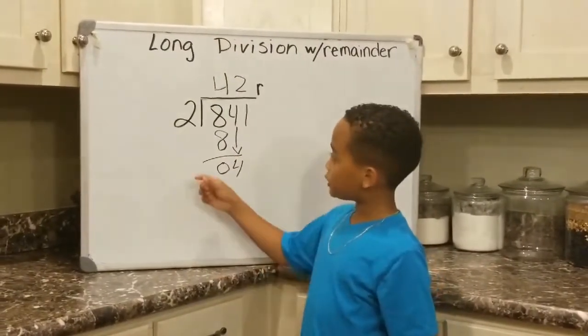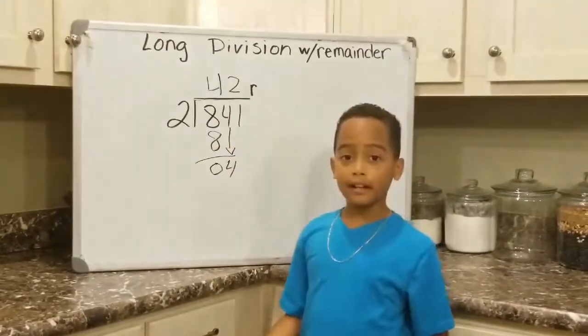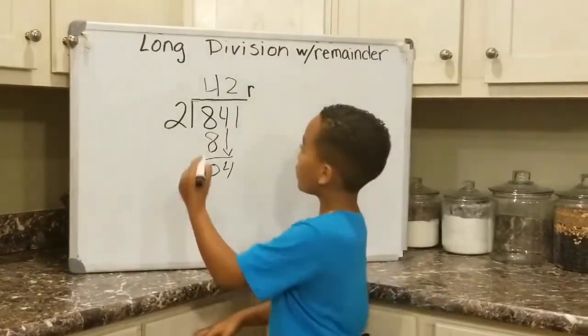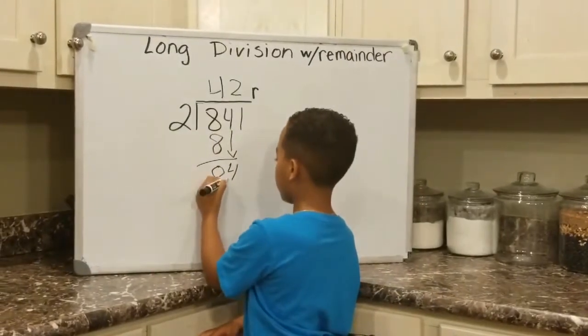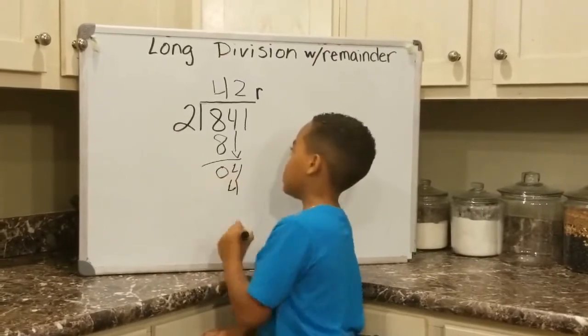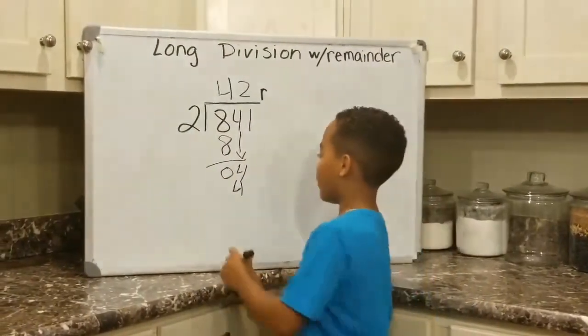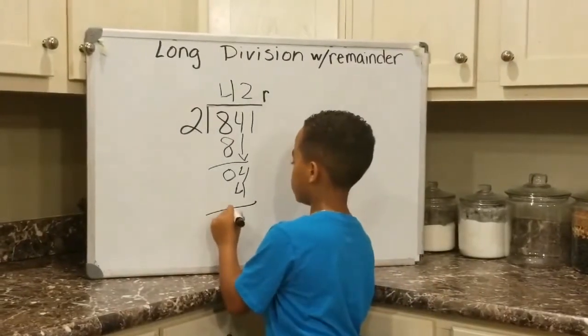Now, we're going to multiply 2 with 2. What is that? 4. We're going to write the 4 below this 4. OK, we're going to subtract 4 from 4. 0.